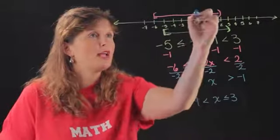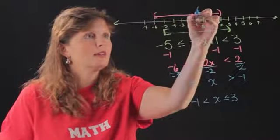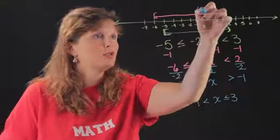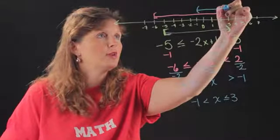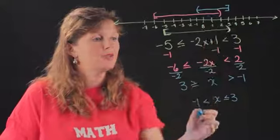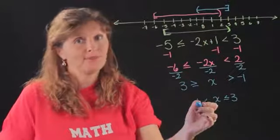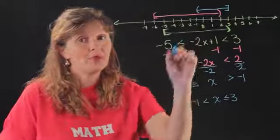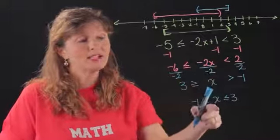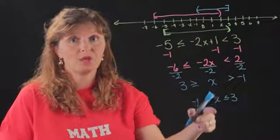So I go from negative 1 to 3, inclusive. So the way it moves on the number line is the same way it moves when you're doing the problem.